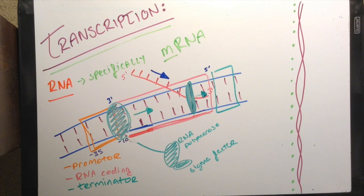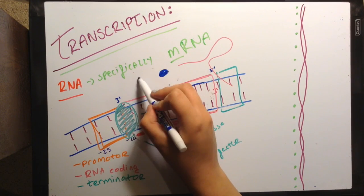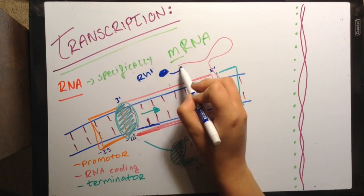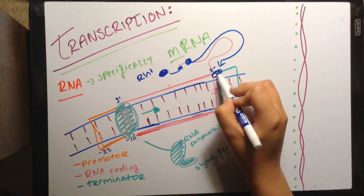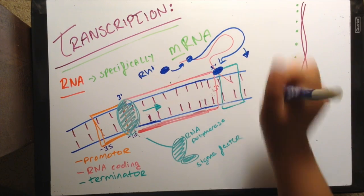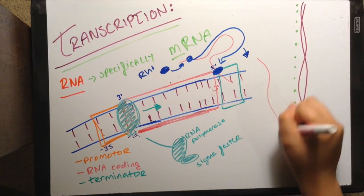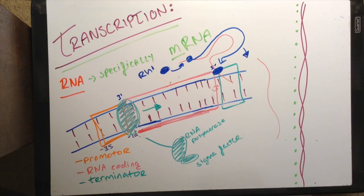Termination occurs after the terminator sequence has been transcribed. This can be rho-dependent or independent depending on the organism. For rho-dependent, a rho protein will attach to the RNA strand at the rho recognition site and a loop will form between this and the termination sequence that will cause everything to stop. The rho protein will move down the RNA polymerase and the RNA strand will dissociate from the DNA parent strand.